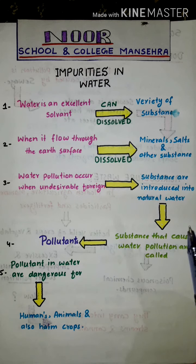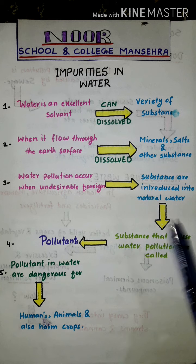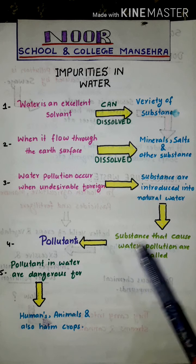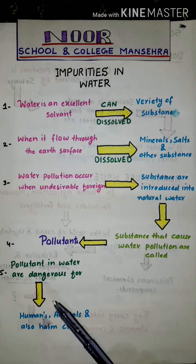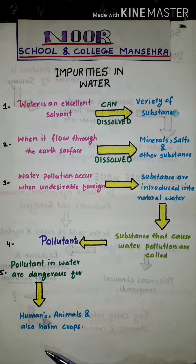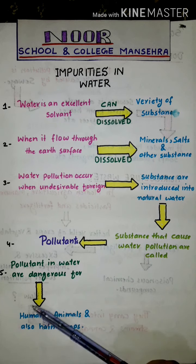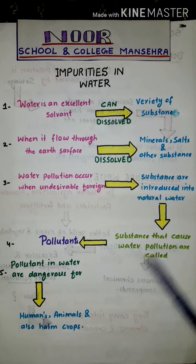The substances which cause water pollution are called pollutants. It is very important to memorize: pollutants are those substances that cause water pollution. Pollutants in water are dangerous for humans and animals, and also harm crops.